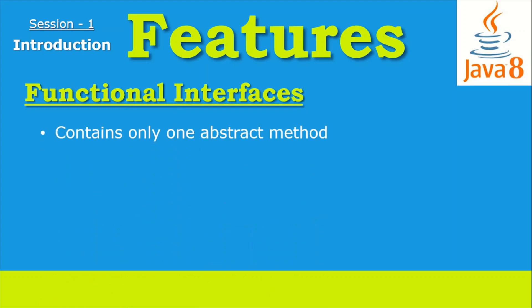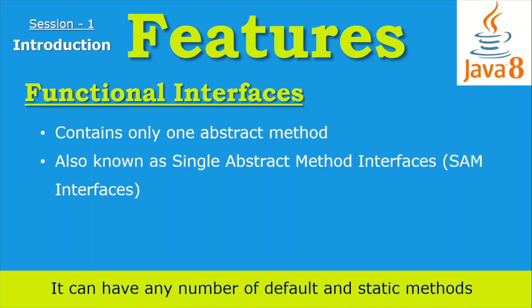The next feature added in Java 8 was the functional interface. An interface that contains only one abstract method — also known as SAM, or Single Abstract Method — is known as a functional interface. It can have any number of default or static methods inside the interface, but the abstract method has to be only one. It can also declare methods of the Object class as well.